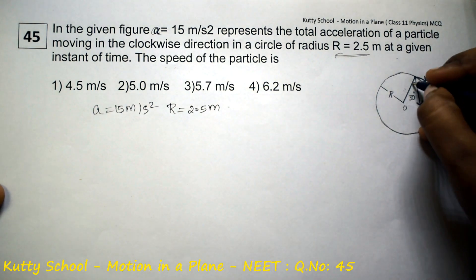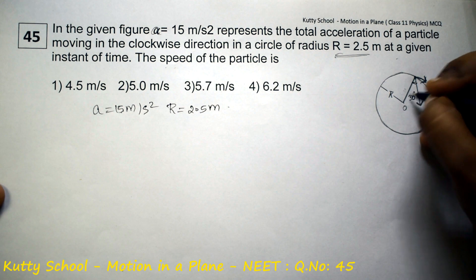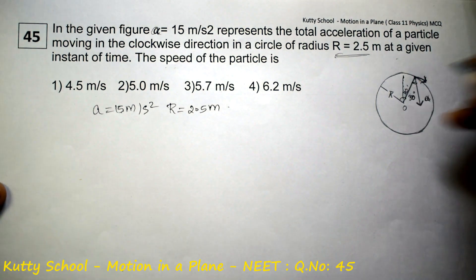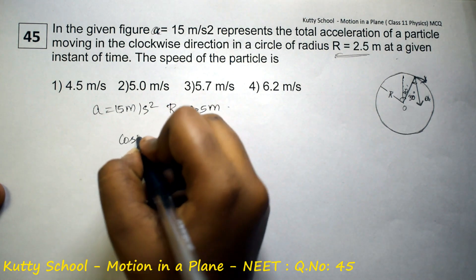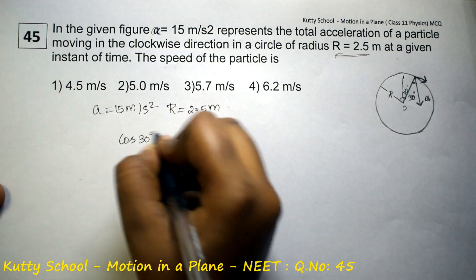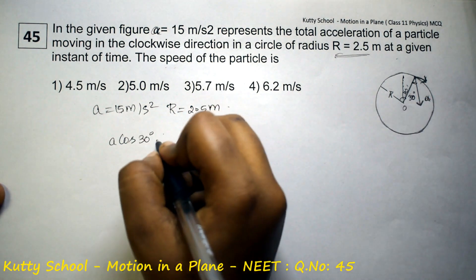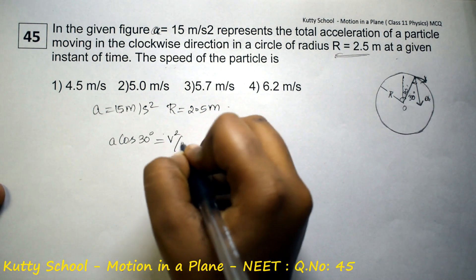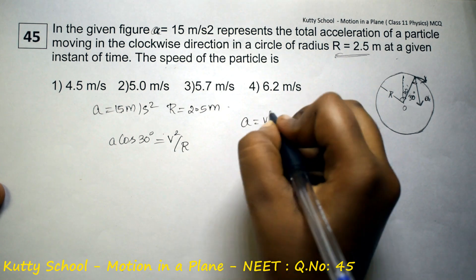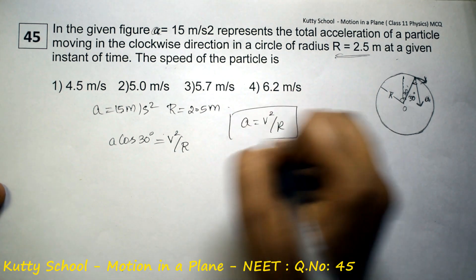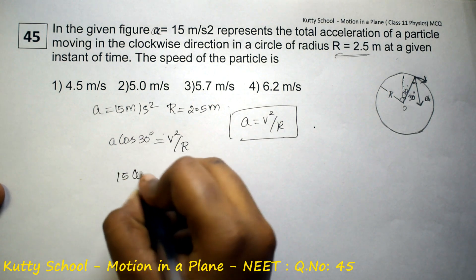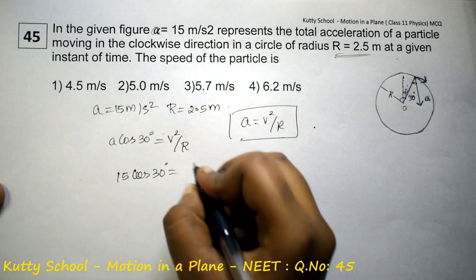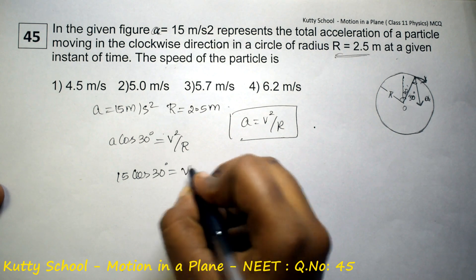If this is 30 degrees, the result is equal to 30 meter per second square. This is cos theta, so this is 30 degree at a given time. Cos 30 degree is equal to v square by r. A is equal to v square by r, and a is equal to cos 30 degree. So a is equal to 15 meter, and cos 30 degree is equal to v square by r.